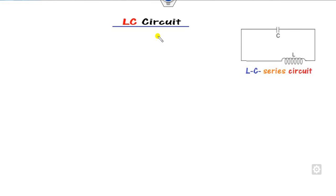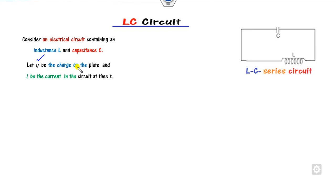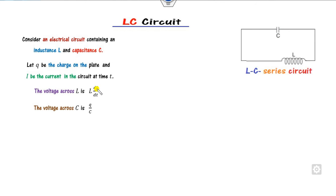Any structure which consists of capacitance and inductance is called the LC series structure. Consider an electrical circuit with inductance and capacitance where I is the current flowing through the circuit and Q is the charge on the plate. The voltage across C is Q/C, since Q = CV, and the voltage across L is L·di/dt.